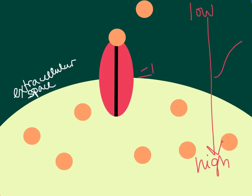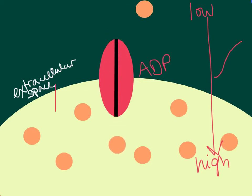ADP — adenosine diphosphate. So we've used that ATP and then the molecule can pass through. This could happen again with a second molecule. We would just need another ATP molecule to be used to provide that energy to move from low concentration outside the cell to the high concentration inside of the cell.